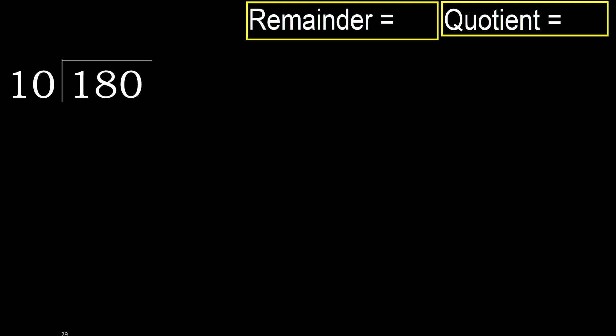180 divided by 10. 1 is less, therefore next. 18 is not less, therefore work with 18. Then multiply by which number is nearest to 18, but not greater.